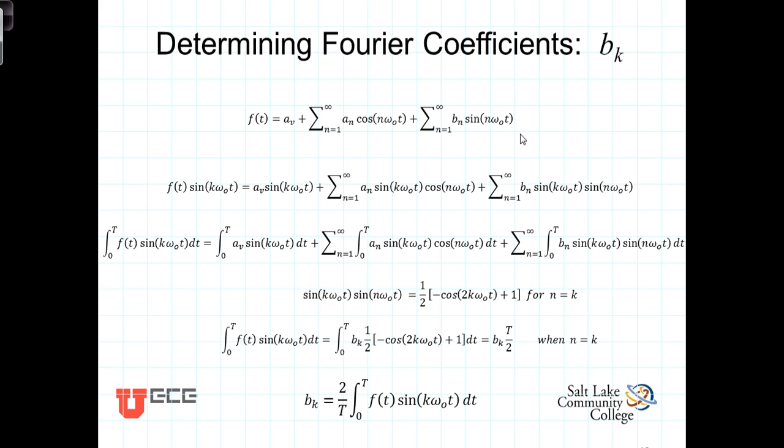To do this, we're going to take advantage of a couple of integrations. First of all, the integral from 0 to t of the cosine of k omega-0 t times the sine of n omega-0 t dt, that equals 0.